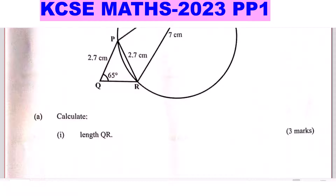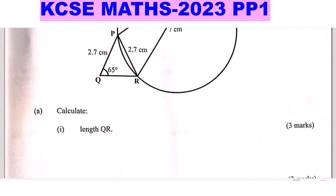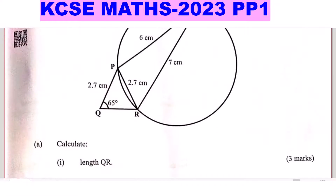Part 1: calculate the length of QR. Looking at the diagram, consider triangle PQR. You are given two sides — PQ is 2.7 and PR is 2.7 — meaning this is an isosceles triangle. If that is the case, it means angle PQR is also 65 degrees, and the remaining angle, because of the sum of angles in a triangle, will be 50 degrees.